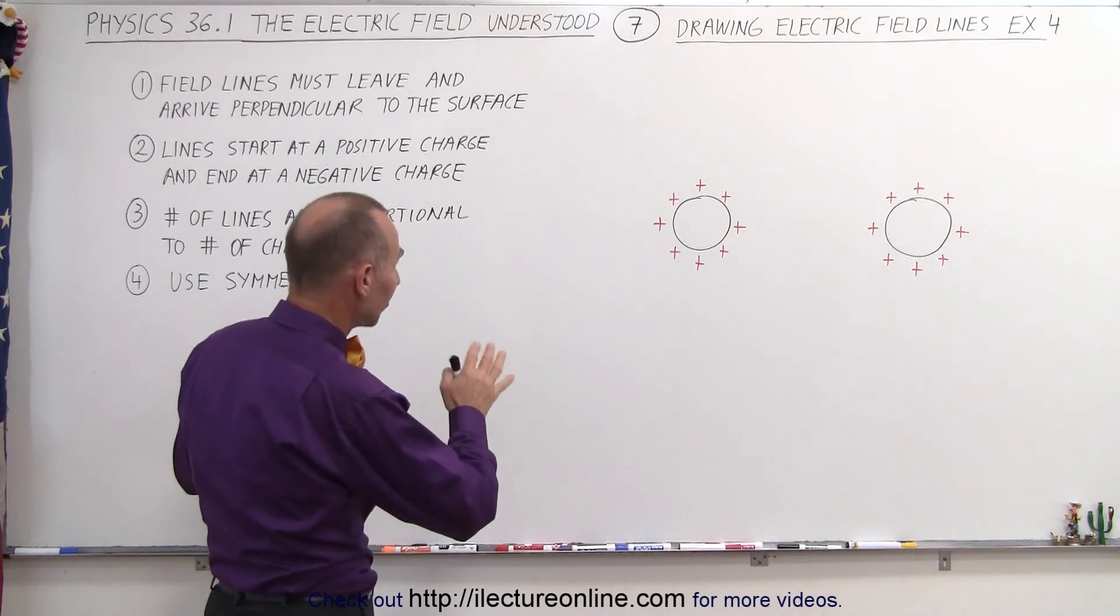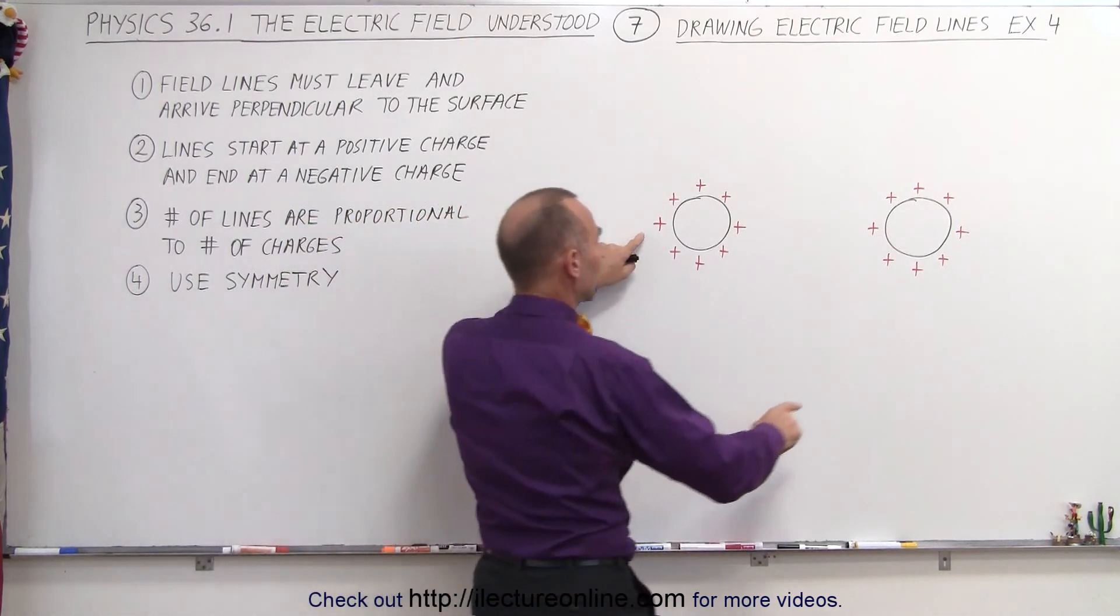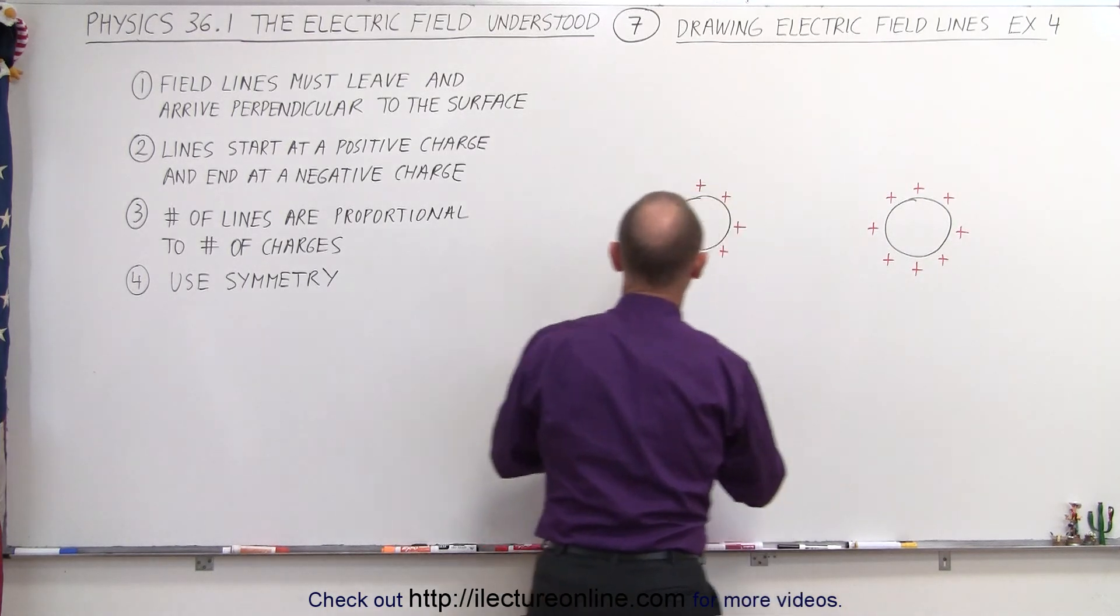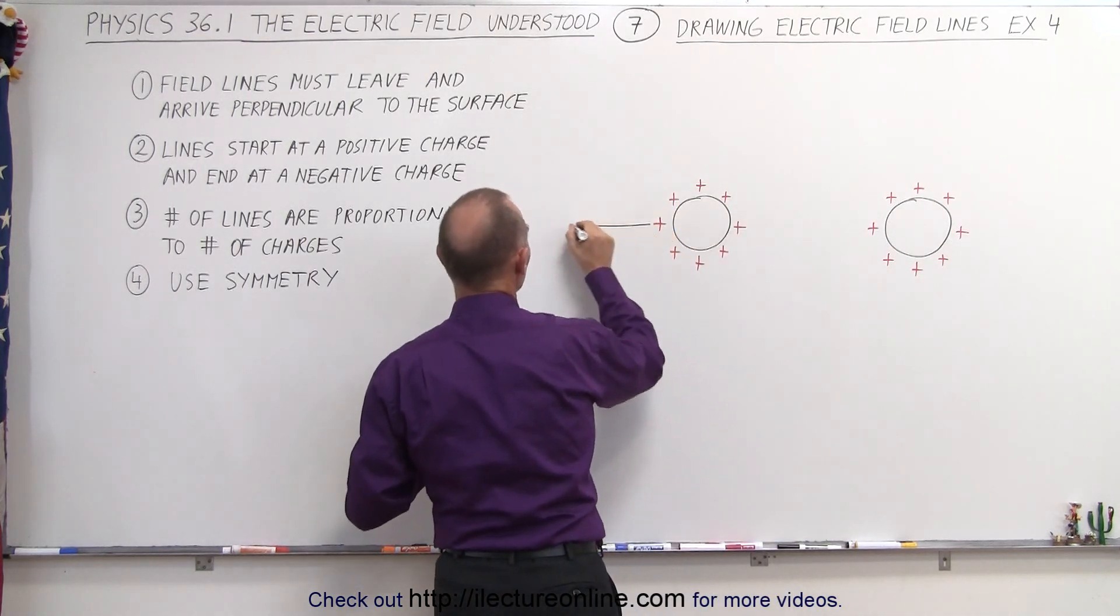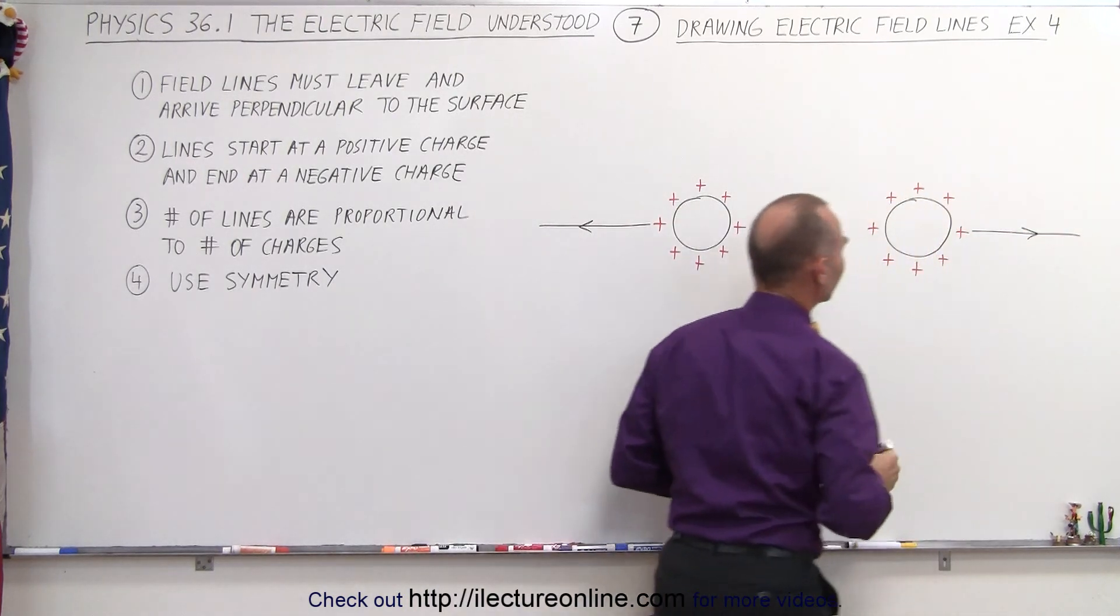We need to hold on to symmetry, and we do know that the ones on the very opposite sides of one another, those are just going to emanate straight out. So this field will go straight out in this direction, and the field over here will go straight out in this direction. Those are the easy ones.